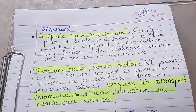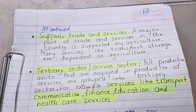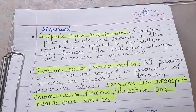Next point: supports trades and services. A major part of trade and services in the country is supported by agriculture. Many services like transport and storage are dependent on agriculture. In one part of the country where a lot of one thing is grown agriculturally, it is taken to different parts of the country - so transport is also getting business because of agriculture. For example, tea or chai patti from Assam or Darjeeling is taken to all parts of the country. Storage facilities and cold storage are also getting business because of agriculture - whatever extra produce there is, bumper crop output, can be kept as buffer stock in cold storage.